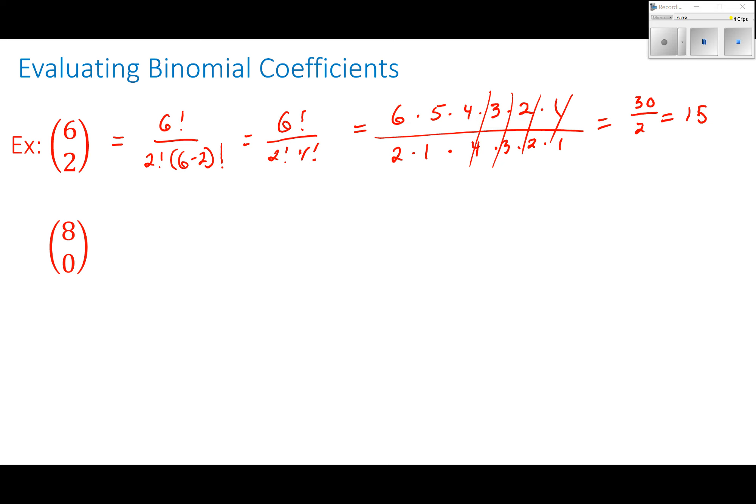If I wanted to do 8 choose 0, well, this would be 8 factorial all over 0 factorial, 8 minus 0 factorial. So this is 8 factorial. 0 factorial we know is 1 all over 8 factorial, so this has to be 1.